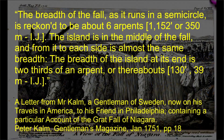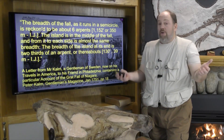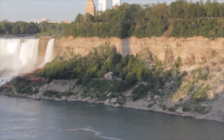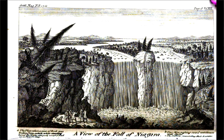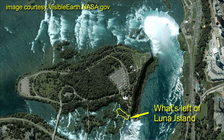Kalm's drawing even matches his very detailed written description, which radically differs from the modern form. For example, "the breadth of the fall, as it runs in a semicircle, is reckoned to be about six arpents. The island is in the middle of the fall, and from it to each side is almost the same breadth. The breadth of the island at its end is two-thirds of an arpent, or thereabouts." The face of the island being maybe 130 feet wide is a far, far cry from the very wide face of Goat Island, which is currently some 1,800 feet wide. That island in the drawings is not Goat Island, but rather Luna Island. Luna Island has long since been eroded away and is now but a small, insignificant rock in the river. Goat Island at that time was in all likelihood submerged under the raging Niagara River — the water volume was magnitudes higher at the time.